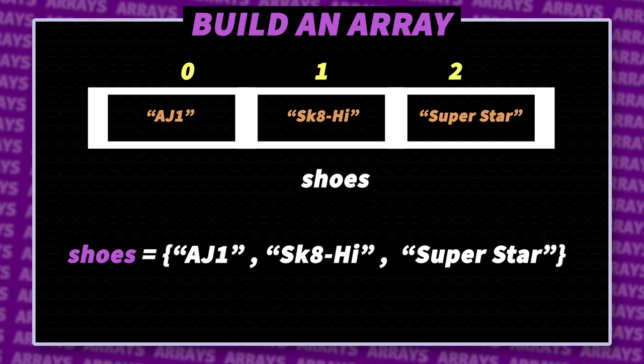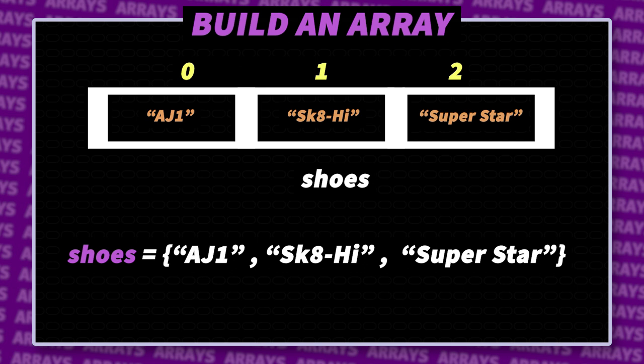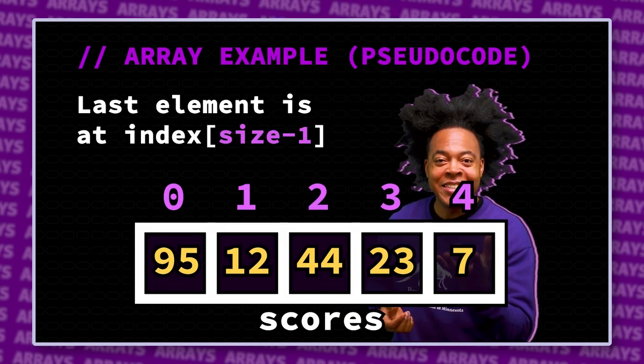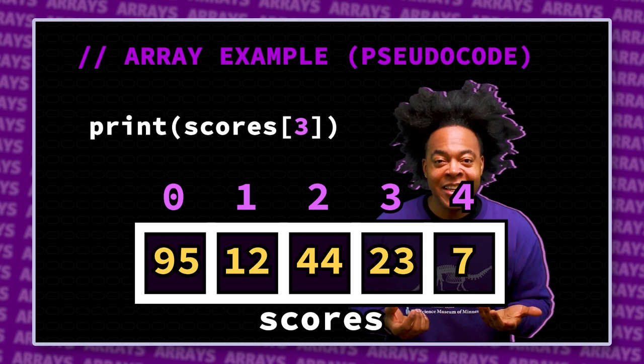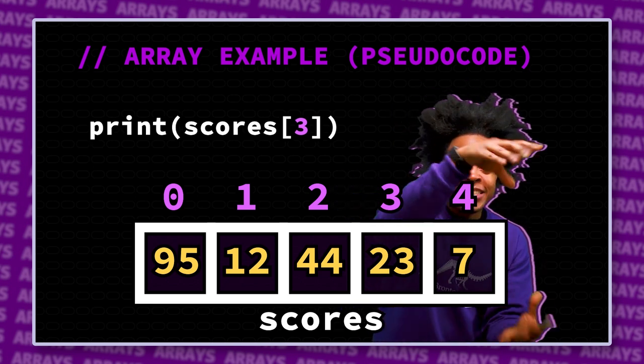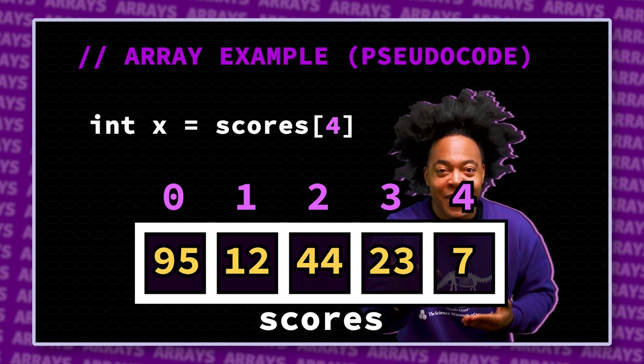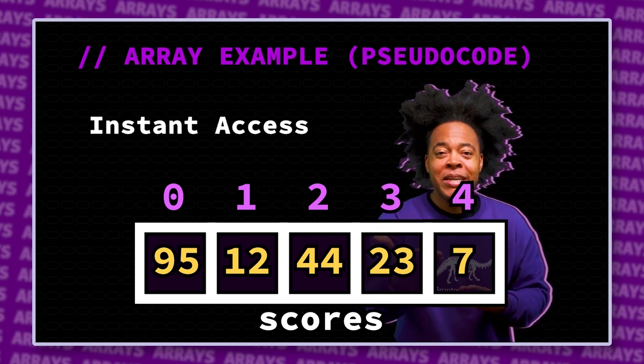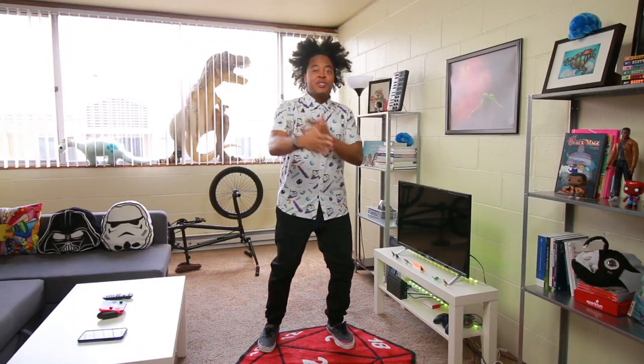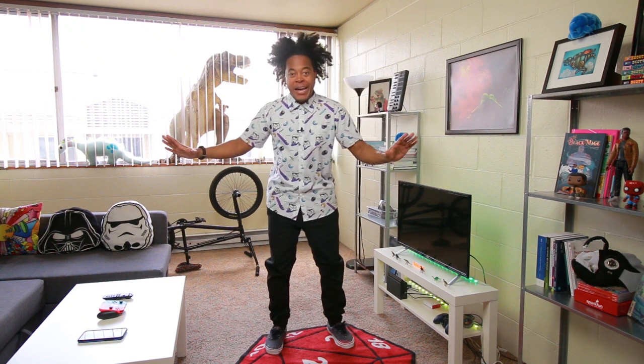After the array gets the data, you can access any index — like a teleportation chamber, meaning you can skip to any location, giving you the fastest access to information. Arrays are pretty fast. It actually takes time for computers to carry out instructions. It usually seems instant, but if you get enough data, it can take a while.